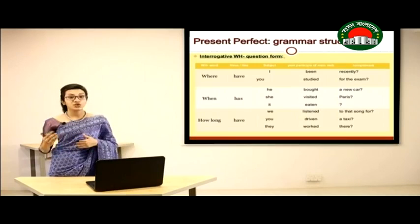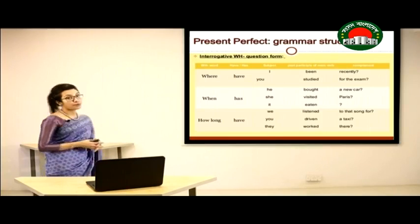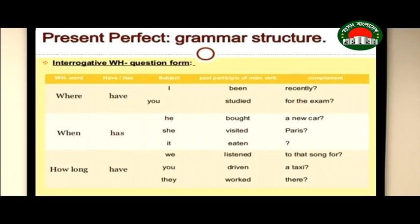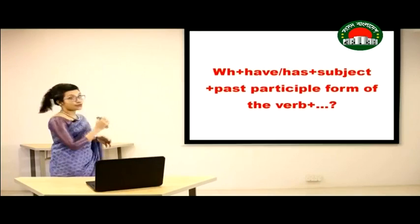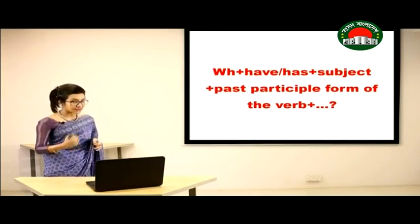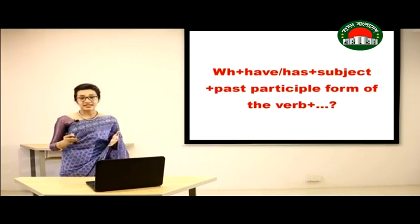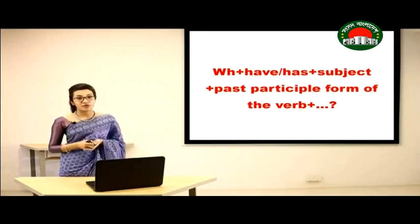For WH questions, we place the WH word at the beginning of the sentence, and the rest of the structure is the same as an interrogative sentence. For example: 'Where have you studied for the exam?' and 'When has he bought a new car?' — the WH word comes first, then have or has, then the subject, then the past participle of the main verb. Any object or complement goes after the past participle, and don't forget the question mark.